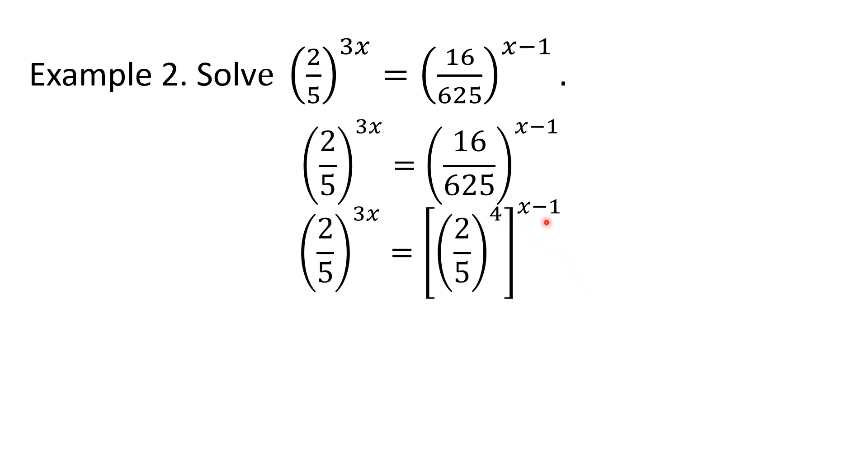Then by power rule for exponents, we will multiply these two exponents. So by distributive property, that will become 4 times x, 4x, 4 times negative 1, negative 4. Notice that both bases in the left-hand and the right-hand sides of the equation are both 2 fifths. So that means we may equate their exponents already.